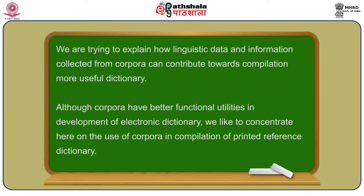We can retrieve all textual information — register, genre, and domain information — and many sociolinguistic details such as user description, gender, age, and metadata from annotated corpora, to supply more accurate information about words to the dictionary. Finally, if there is a monitor corpus, we can track how words are being replaced by a new set of words in the language. If you have a diachronic corpus, you can find out which words are in use, which words are dying out, which words are coming in, and which words are also changing their meaning and function over time.